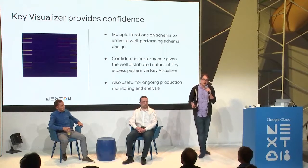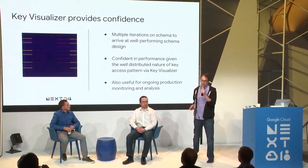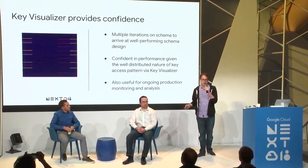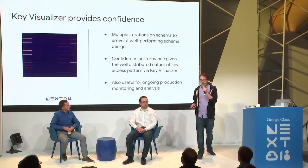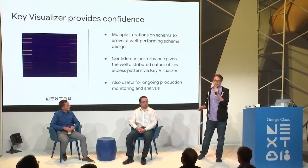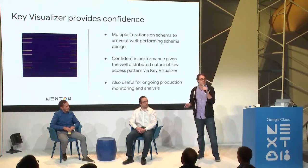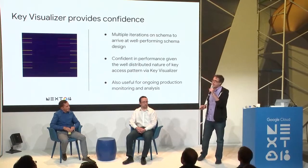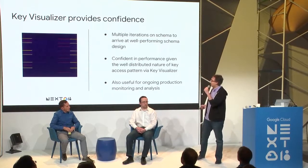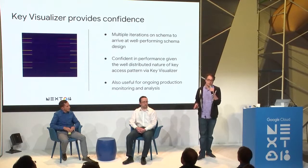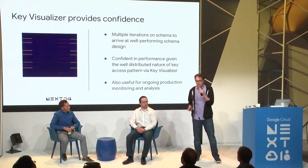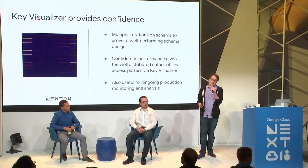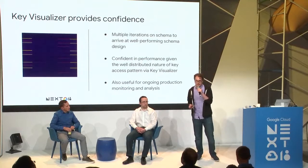Being able to iterate like this gave us confidence that when we took this product to production, we wouldn't end up with horrible performance issues or have to redesign it in a year because it wouldn't scale. Key Visualizer has also been really helpful for production issues — like why is latency going up for certain advertisers? We can go right into Key Visualizer and see what was happening at that time.